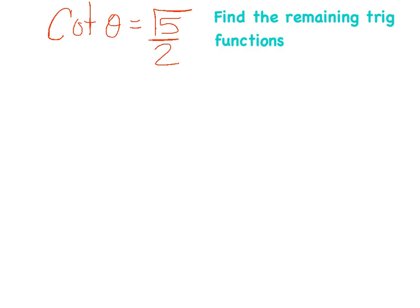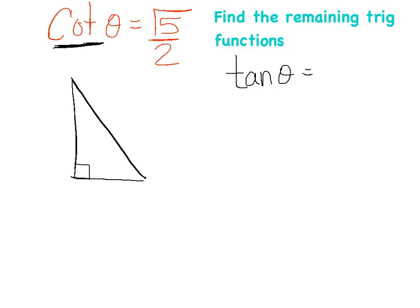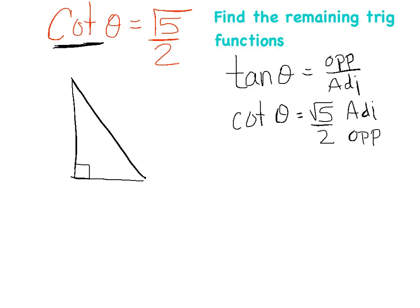Let's try one more: cotangent of theta = √5/2, find the remaining trig functions. Draw a right triangle. Since cotangent is the reciprocal of tangent, and tangent = opposite/adjacent, cotangent gives us adjacent/opposite. So the adjacent side is √5 and the opposite side is 2.